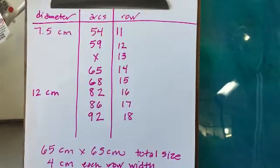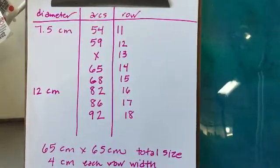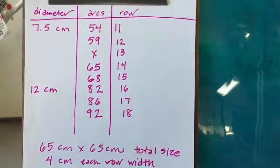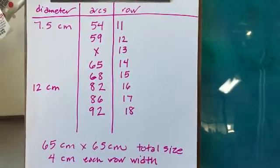Row 13 I did not count so I don't know what that was. Row 14 there were 65 arcs, row 15 we had 68 arcs, row 16 we had 82 arcs.